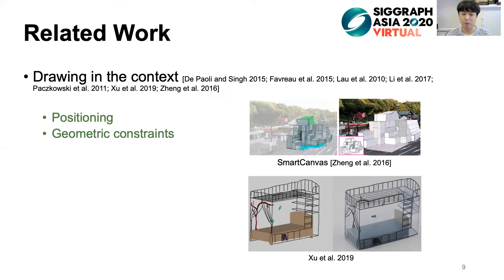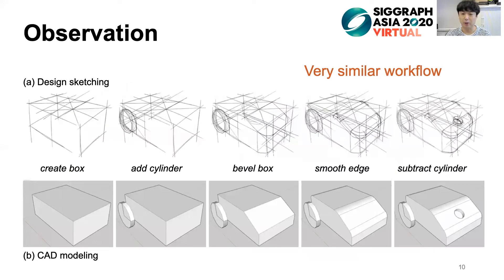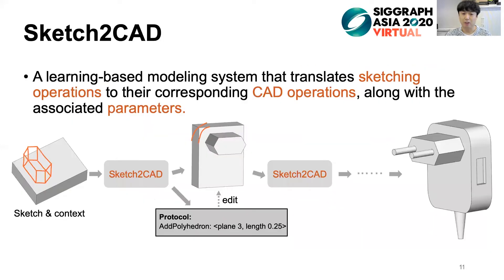Now let's see how our algorithm works. Our key observation is based on the similarity between sketching and CAD modeling workflows. As shown in this example, starting from a cuboid, users iteratively model complex shapes by adding or removing parts. This sequential workflow corresponds well to the way industrial designers draw objects and to the way CAD modeling software represents 3D shapes. Based on this observation, we propose Sketch2CAD, a learning-based interactive modeling system that translates sketching operations into CAD modeling operations. Our system takes as input user-drawn strokes in the context of the current modeling session and maps them into a sequence of predefined CAD operations along with their parameters. The parametric nature of our operations enables easy editing.